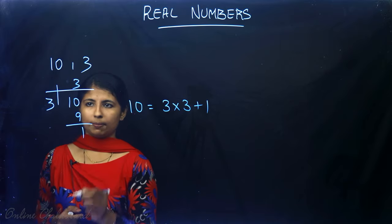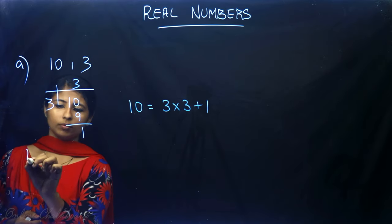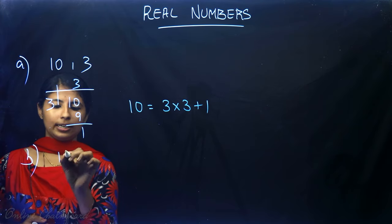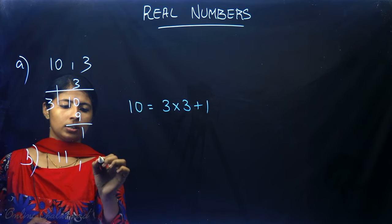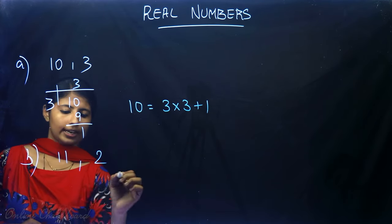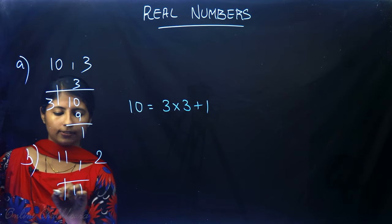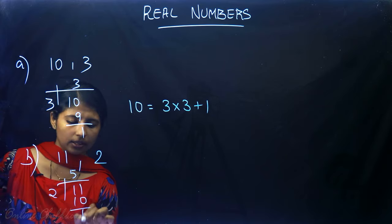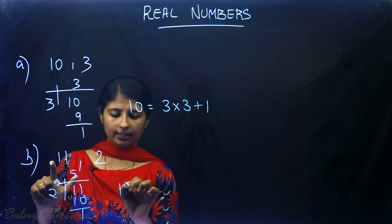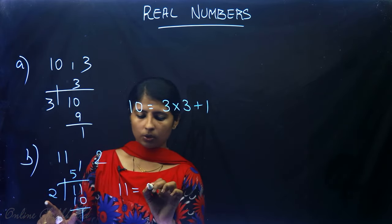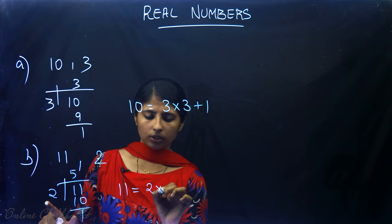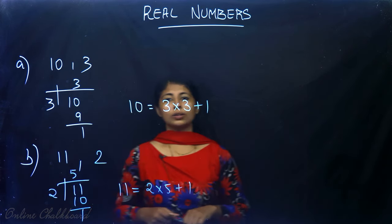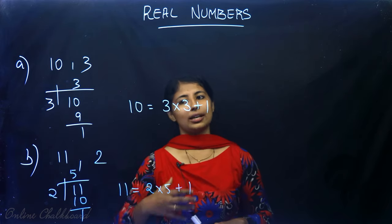Let's take another example. Suppose you are asked to divide 11 by 2. 11 divided by 2: two 5's are 10, remainder 1. So I can write 11 = 2 × 5 + 1, where 1 is the remainder. This is exactly what Euclid's division lemma says.